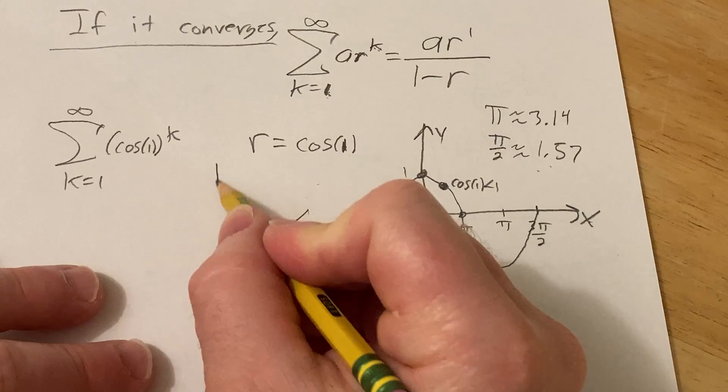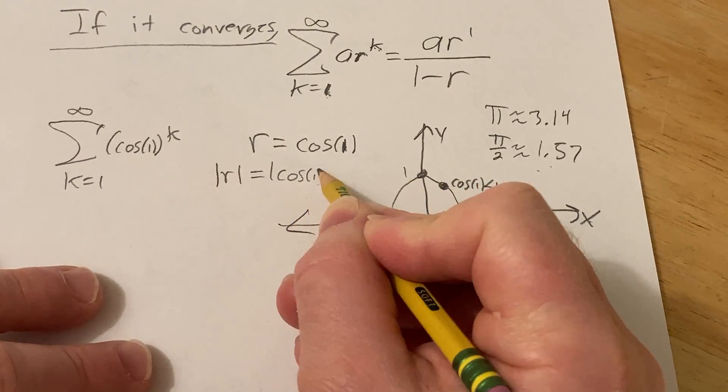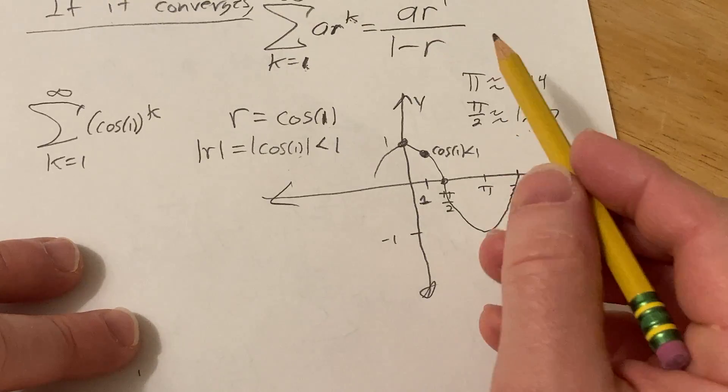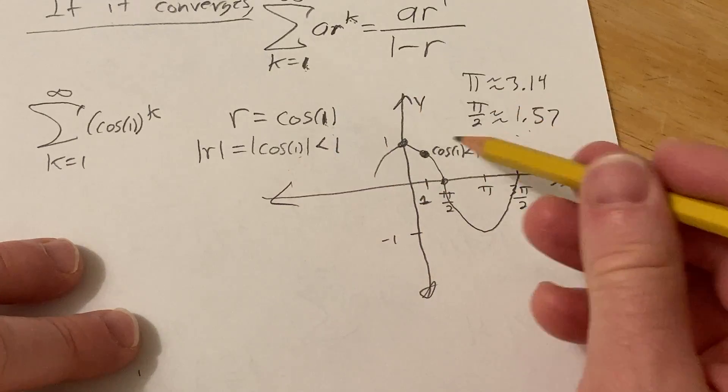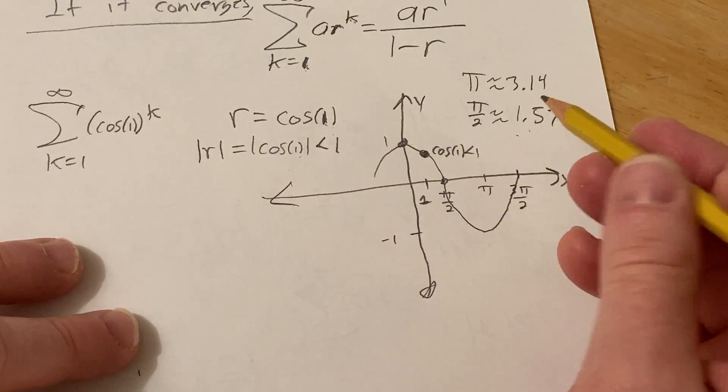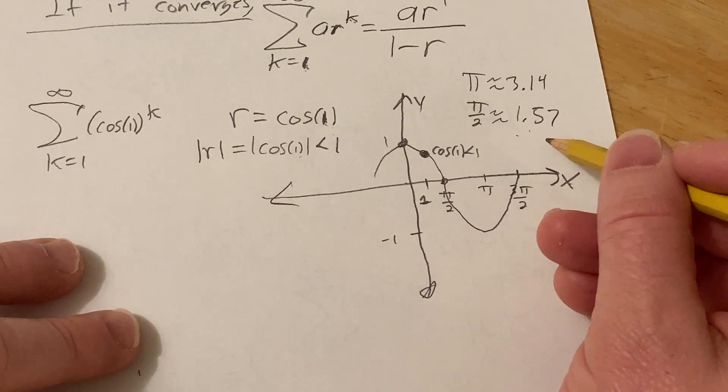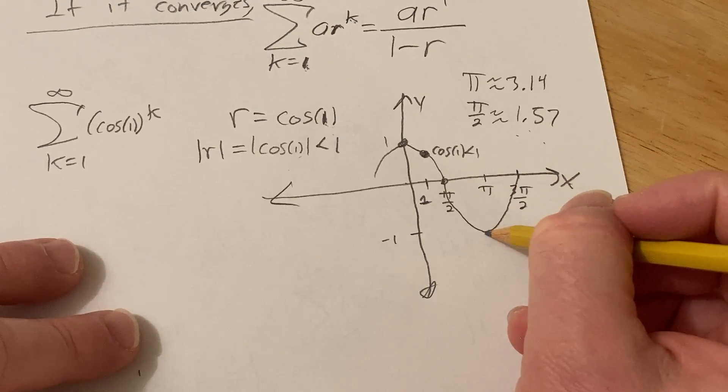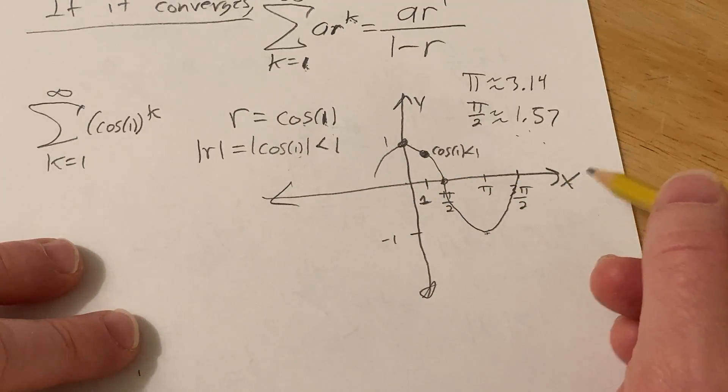In fact, strictly less than 1. So the absolute value of r is the absolute value of cosine of 1, which is definitely less than 1, right? No issues there. In fact, this is always going to be, the cosine of any number is always going to be less than 1, as long as you're not at like 0, or 2 pi, or pi, right? Because cosine of pi is negative 1, so an absolute value will be 1. So you basically just have to avoid multiples of pi.